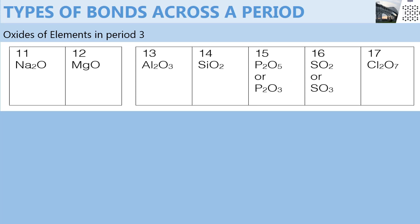Now for these elements—phosphorus, sulfur, and chlorine—they form oxides that contain covalent bonds, because they are all non-metals.